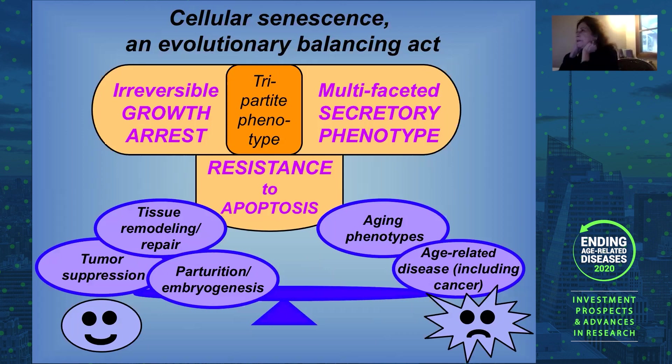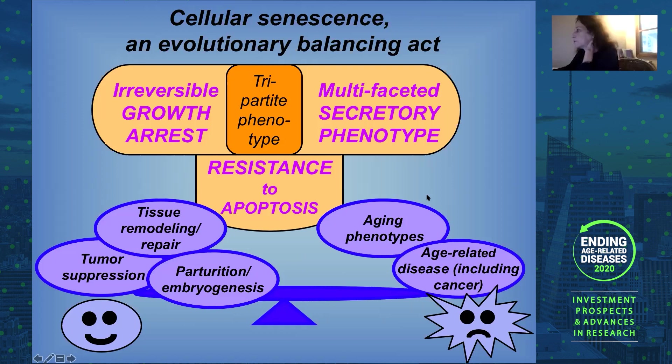The way we really prefer to think about senescence is that it is an evolutionary balancing act. It evolved for good purposes: suppressing cancer, causing tissue remodeling, and enabling embryogenesis and parturition. But the downside is that when senescent cells accumulate — which they do during aging — the secretory phenotype can begin to drive those manifestations of aging, including, very ironically, late-life diseases that include cancer.